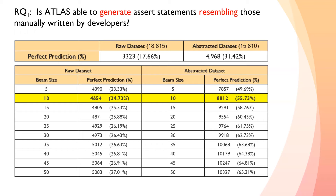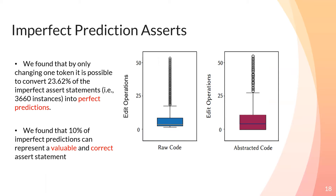In addition to this, we wanted to analyze the imperfect predictions of the model to determine if they were still useful, even though they were not exactly what the developer had written. We found that by only changing one token, it is possible to convert close to 24% of the imperfect assert statements into perfect predictions. Likewise, about 10% of the imperfect predictions still represented a valuable and correct assert statement — they were just not exactly what the developer had written. This figure shows a distribution of the number of edit operations needed to take the imperfect predictions and make them perfect predictions. As you can see, it would take a relatively low number of edit operations to perform this.